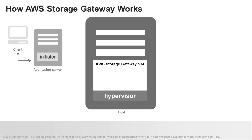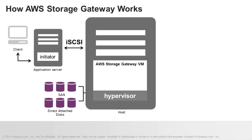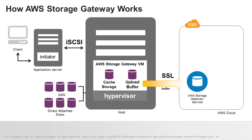As your applications access data from a gateway cached volume over iSCSI, this data is stored in an on-premises cache for low latency access, referred to as cache storage. Your gateway also stores incoming writes in a staging area referred to as an upload buffer. This upload buffer space is used by your gateway to prepare and buffer data for upload to AWS. Your gateway then uploads this data over an encrypted SSL connection to the AWS Storage Gateway service running in the AWS cloud. The service then stores the data encrypted in Amazon S3.